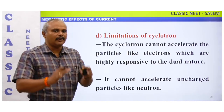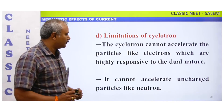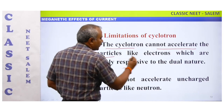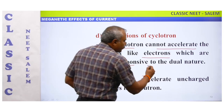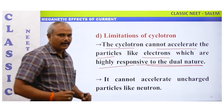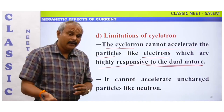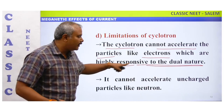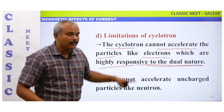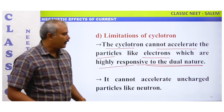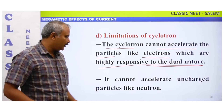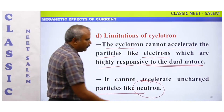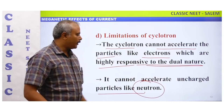Limitations of cyclotron: The cyclotron cannot accelerate particles like electrons, which are highly responsive to their dual nature — behaving as both particle and wave. It also cannot accelerate uncharged particles like neutrons. These are the main drawbacks of the cyclotron.